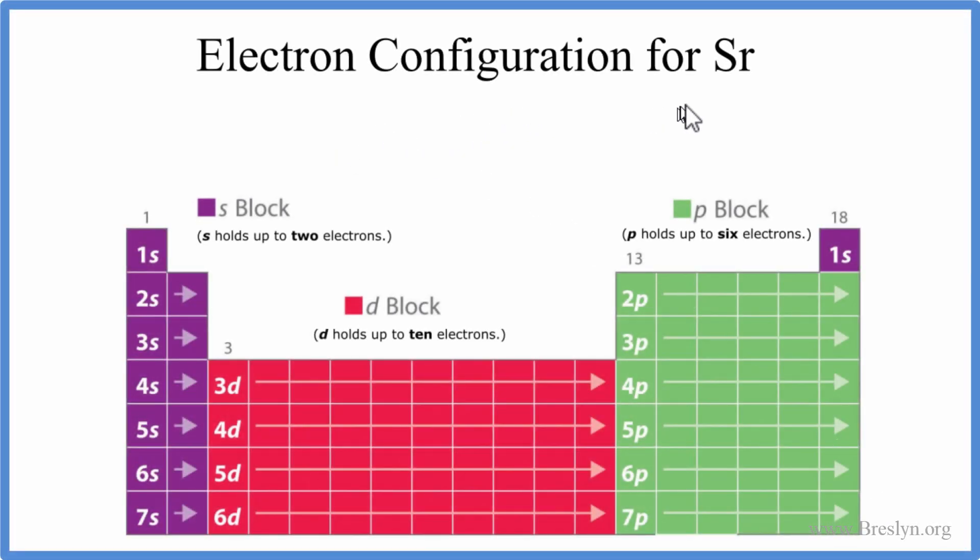To write the electron configuration for strontium, we first go to the periodic table. We look up strontium, and strontium has an atomic number of 38. That means it has 38 protons. Because it has 38 protons and it's a neutral element, we don't have a plus or minus here, the number of protons equals the number of electrons. So 38 protons, we have 38 electrons to write the electron configuration for strontium, Sr.